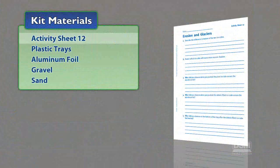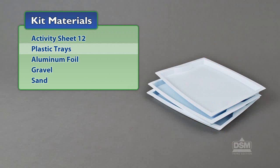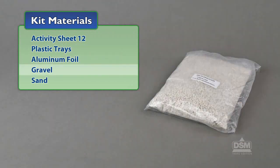You will need the following materials from the kit: Activity sheet 12, plastic trays, aluminum foil, gravel and sand.